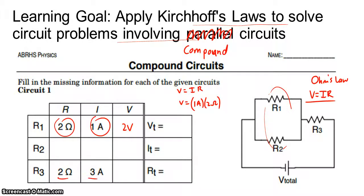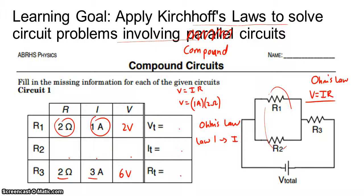We can do the same process for this and find 6 volts. Now we're a little stuck — we can't use Ohm's Law anymore, because we need to know two of the variables to find the third. So we need to look at the first law, which has to do with current, and the second law, which has to do with voltage.